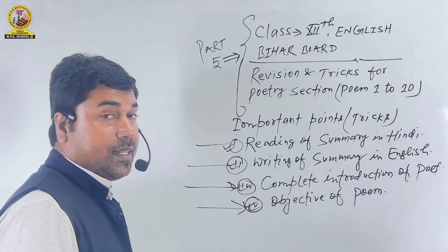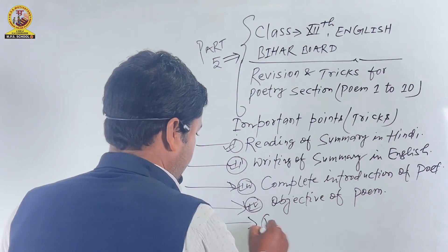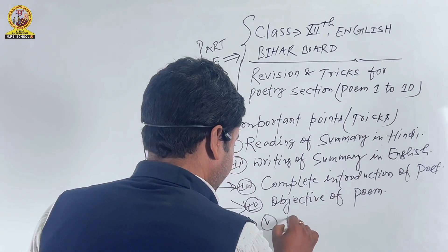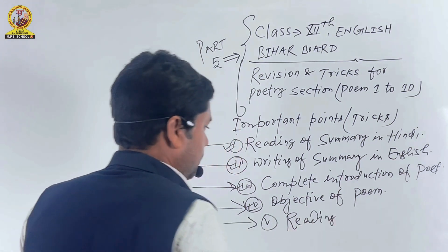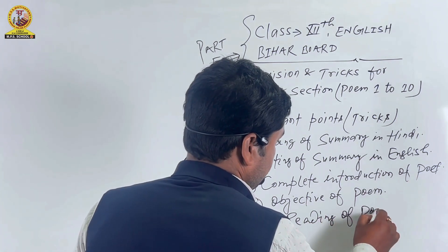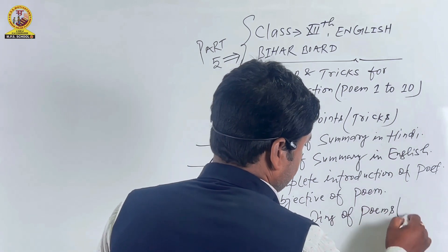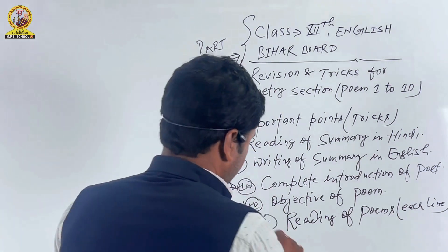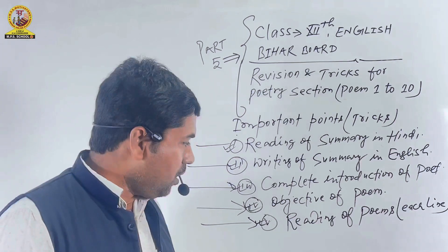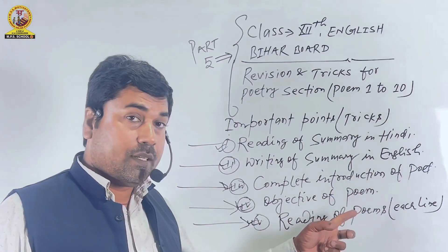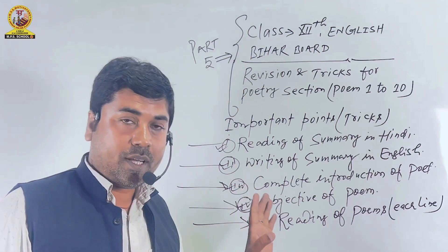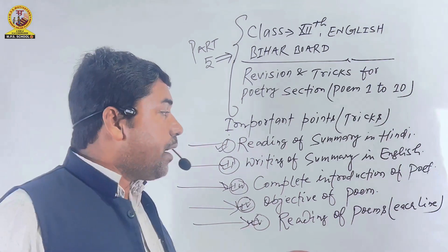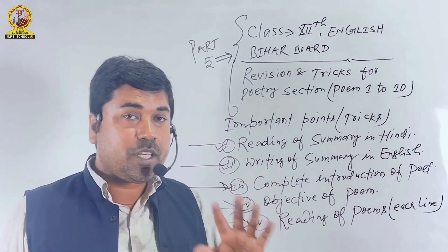Now chalte hain point number 5, and this is the last point: reading of poems, each line. Yoh sabse important hai friends — kavita ki pratyek line ka reading. Pratyek kavita ki reading ek baar, do baar nahi — kam se kam 5 baar, 6 baar, 7 baar, 8 baar.